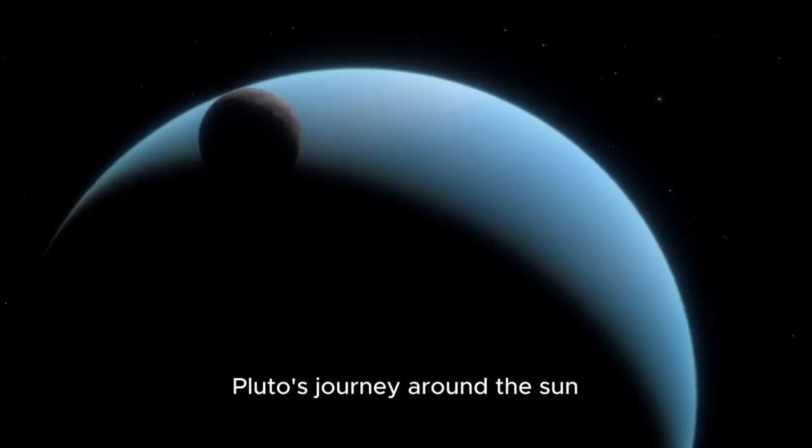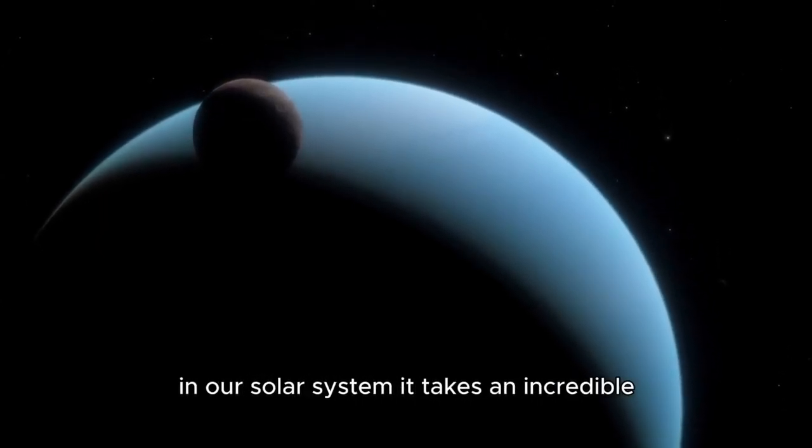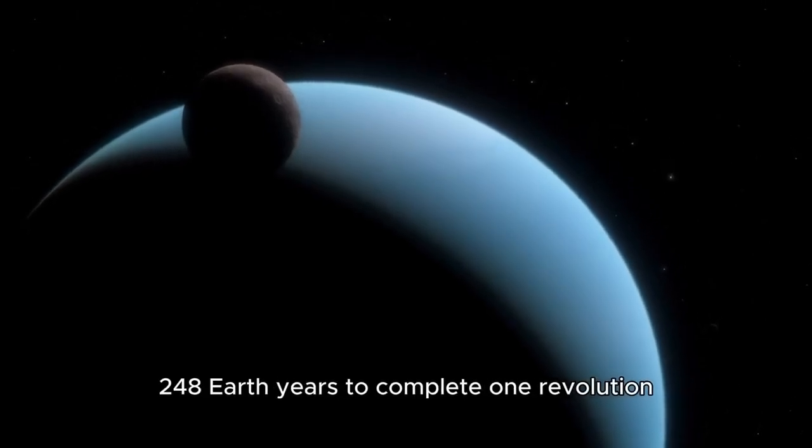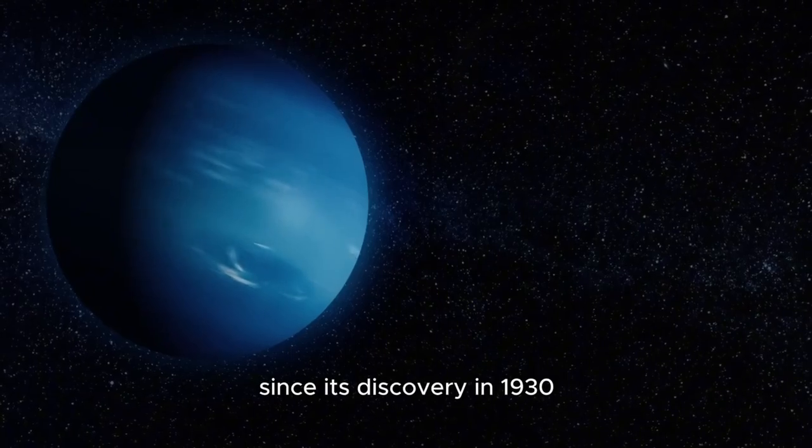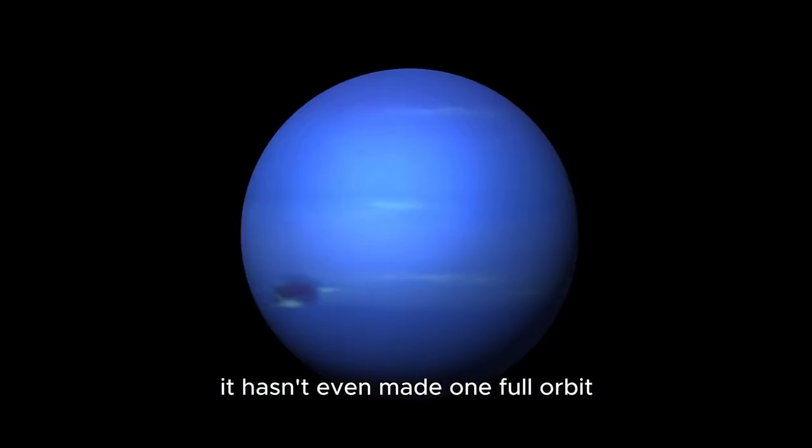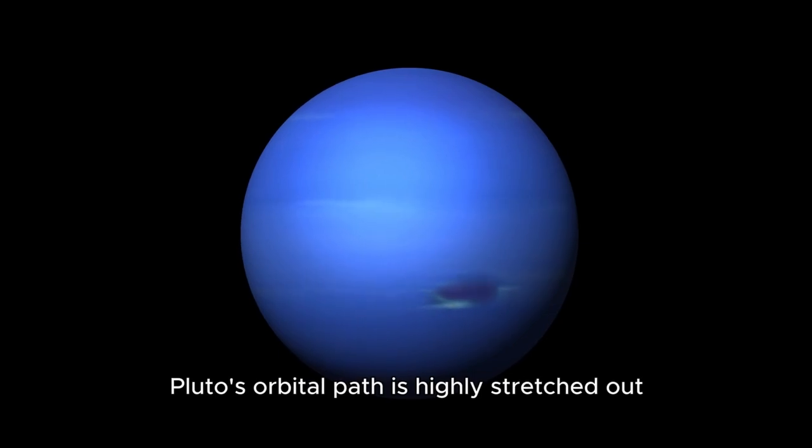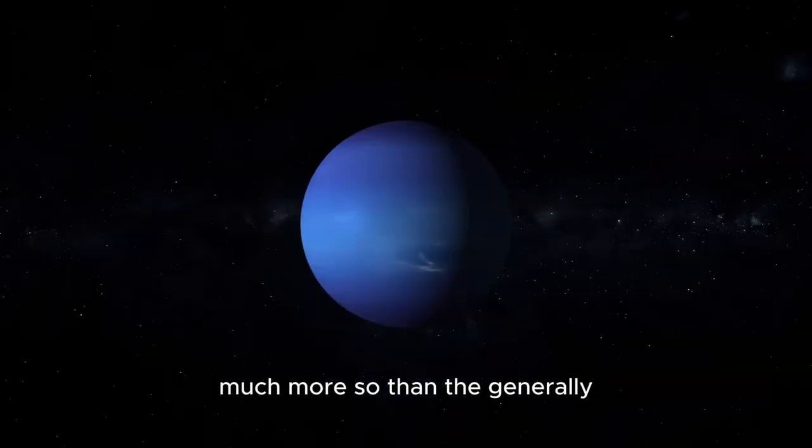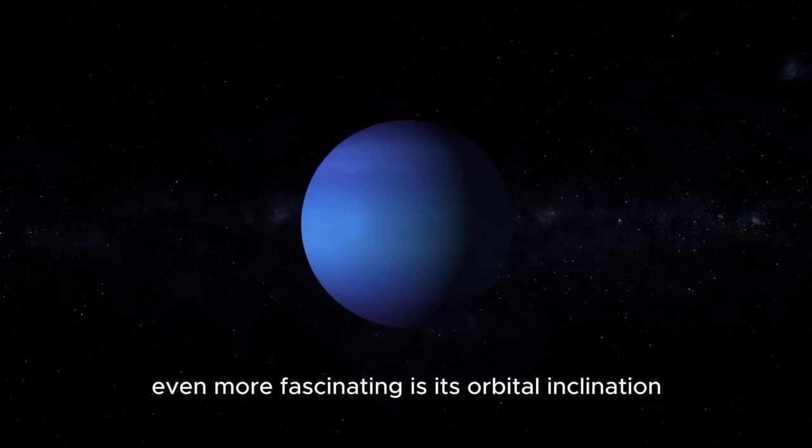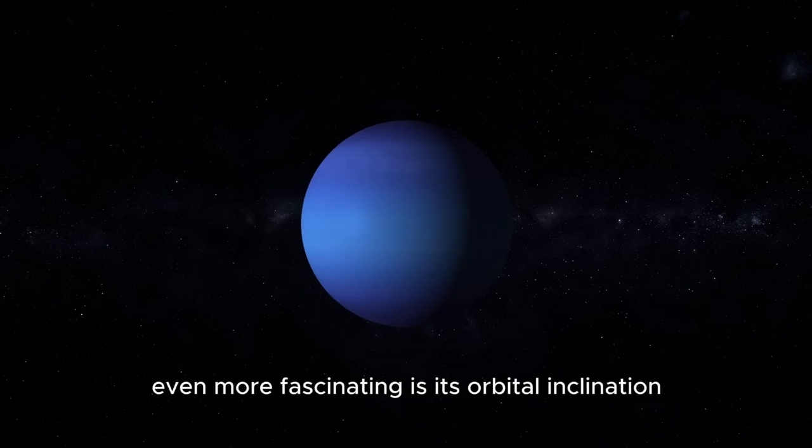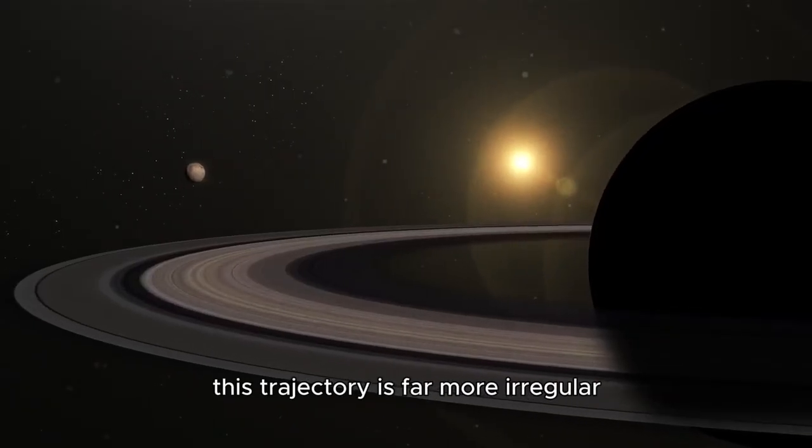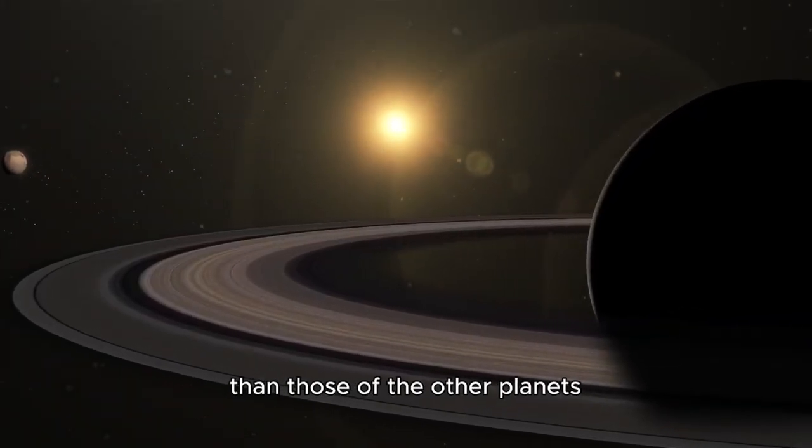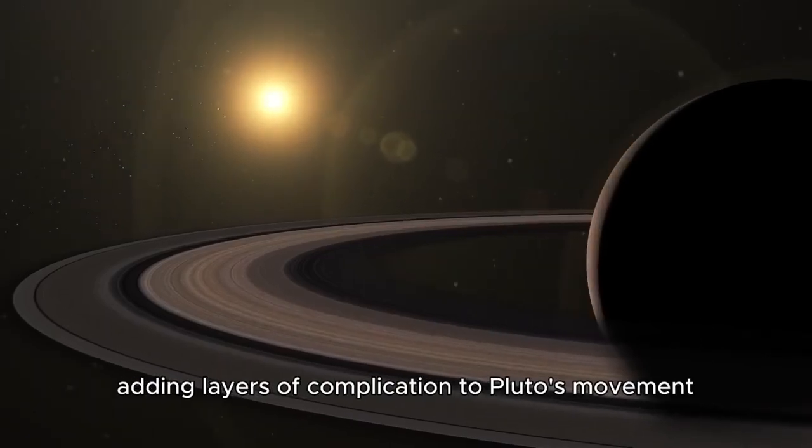Pluto's journey around the Sun is unlike any other orbiting body in our solar system. It takes an incredible 248 Earth years to complete one revolution. Since its discovery in 1930, it hasn't even made one full orbit. Still, the intrigue doesn't stop there. Pluto's orbital path is highly stretched out, much more so than the generally circular paths of the main planets. Even more fascinating is its orbital inclination, a tilt of 17 degrees compared to the Sun's plane. This trajectory is far more irregular than those of the other planets, adding layers of complication to Pluto's movement.